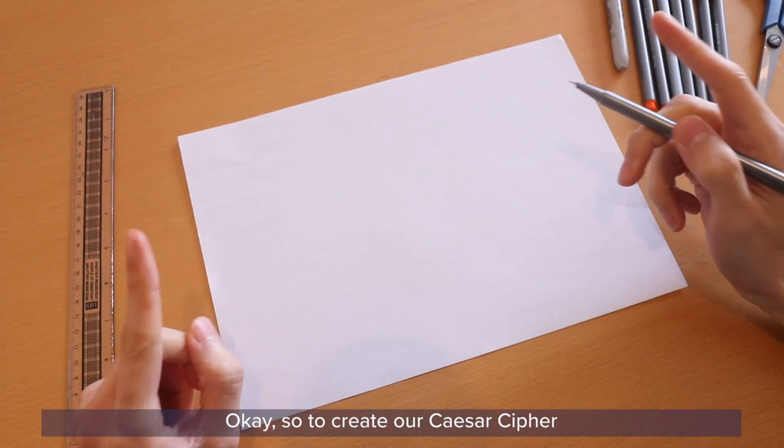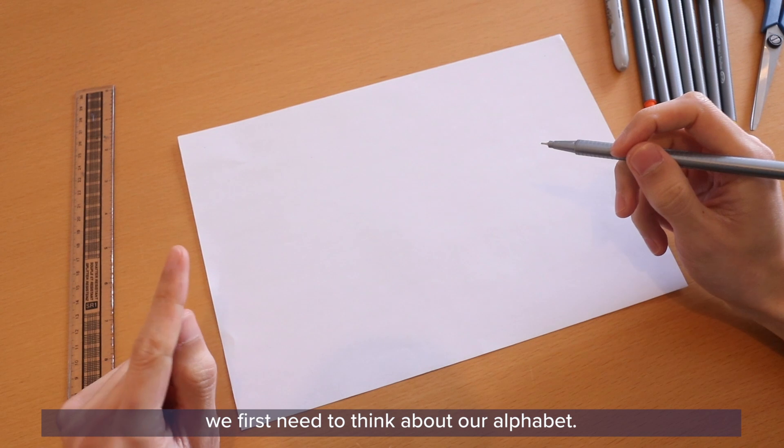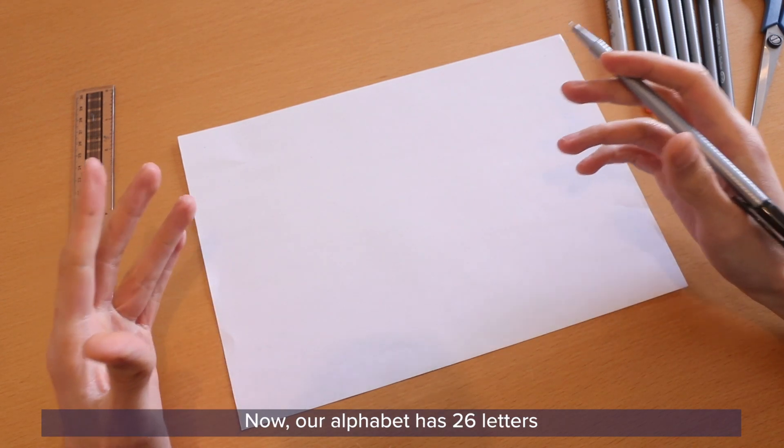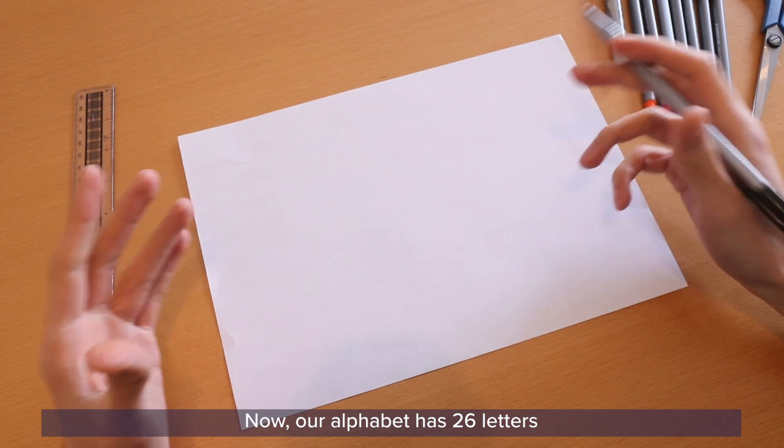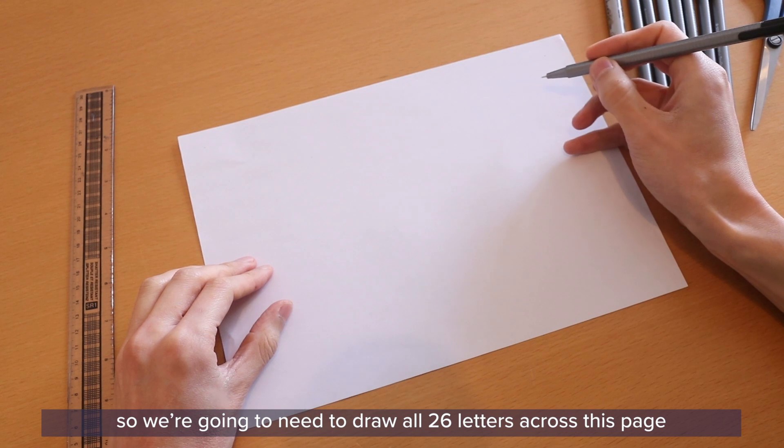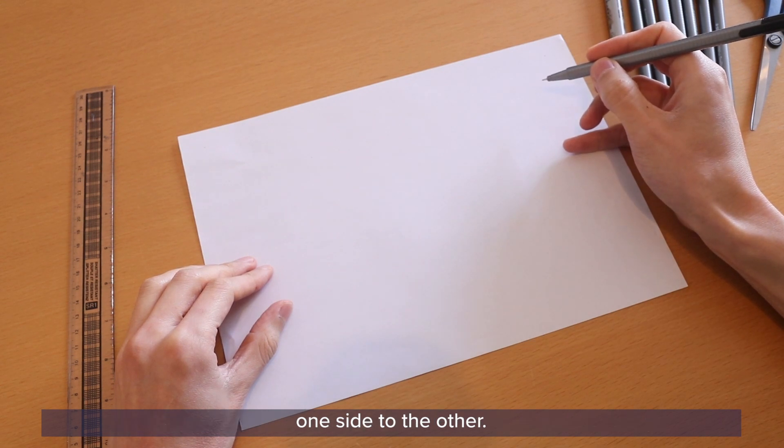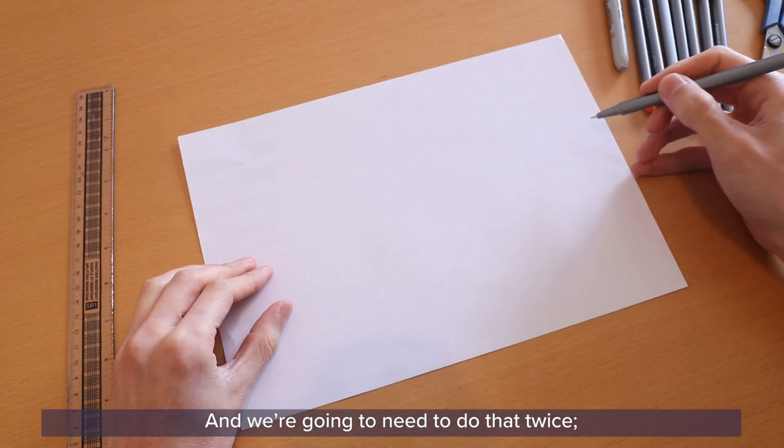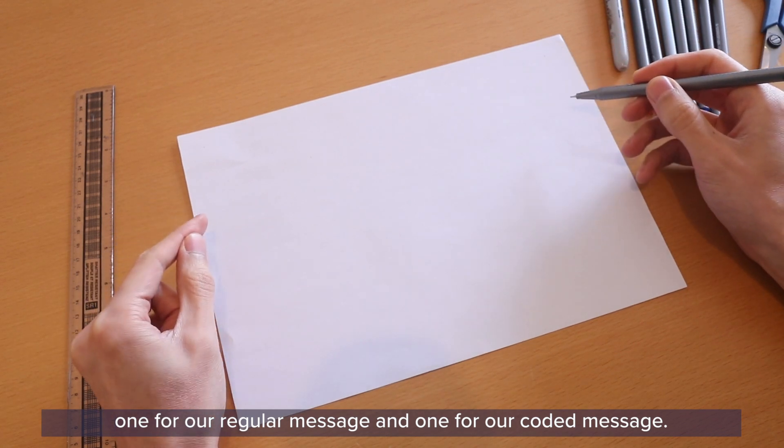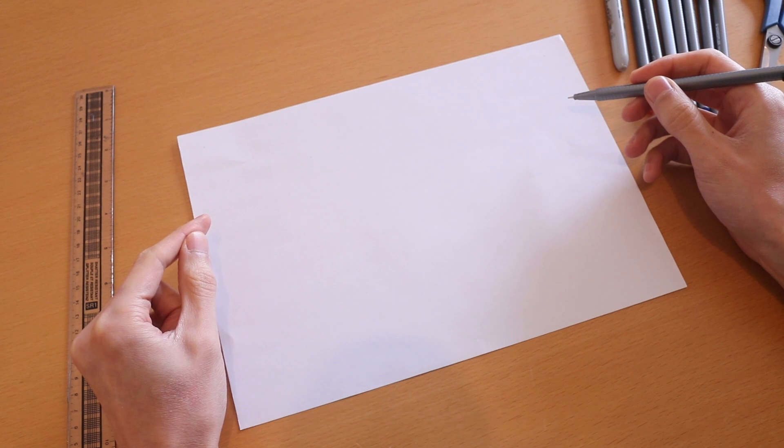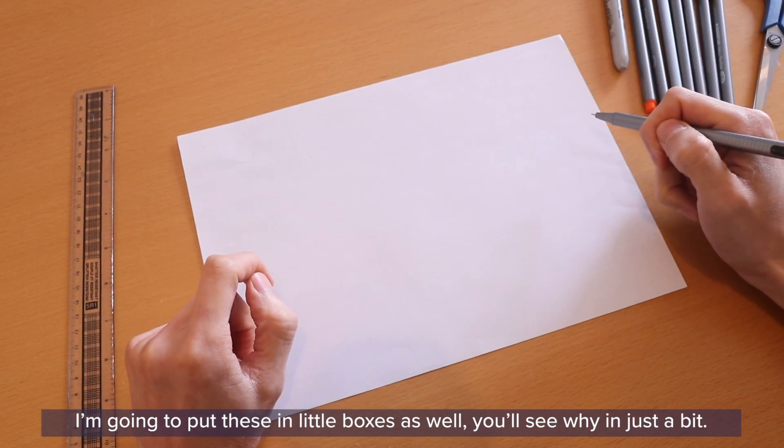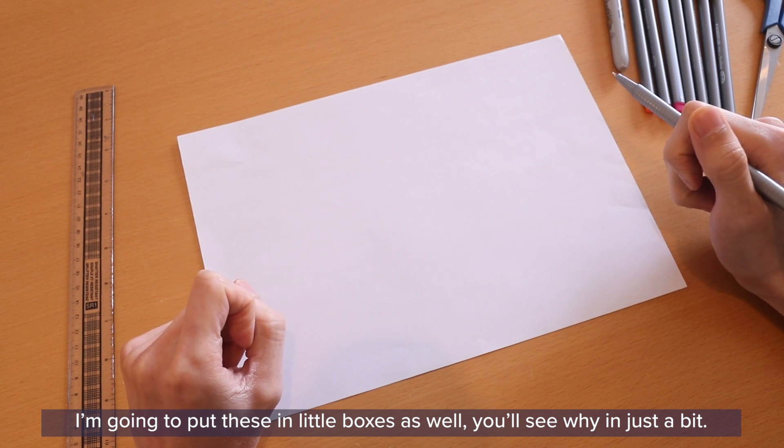Okay, so to create our Caesar cipher, we first need to think about our alphabet. Now our alphabet has 26 letters, so we are going to need to draw all 26 letters across this page, one side to the other. And we're going to need to do that twice. One for our regular message and one for our coded message. And to make this a little bit easier and clearer, I'm going to put these in little boxes as well. You'll see why in just a bit.